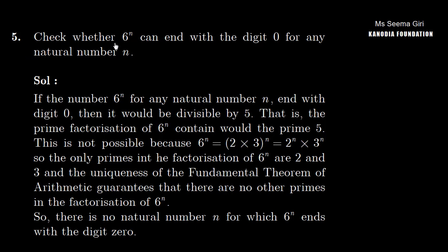Question number 5: Check whether 6 raised to the power n can end with the digit 0 for any natural number. Let's take a theory to relate this question. If the number 6 raised to the power n, for any natural number n, ends with digit 0, then it would be divisible by 5.